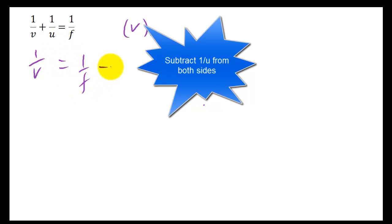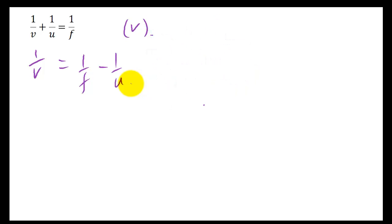So I just leave 1 over V here, and I get minus 1 over U here. Now, what you can do is, because this is a reciprocal - reciprocating is to turn a fraction upside down. If you were to turn 1 over V upside down, you'd get back to V over 1, which is just V. So it would be nice if we could turn this upside down, but we can't do that unless it's a single fraction.